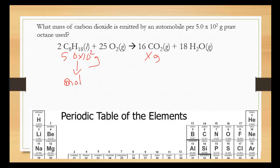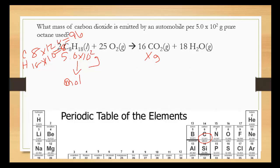Whenever you see the unit grams, you automatically have to think about the molar mass. So let's figure out the molar mass of C8H18. We have eight carbons and 18 hydrogens. Carbon is 12.0 on the periodic table, so eight times 12.0 comes out to be 96. We have 18 hydrogens at 1.0, which comes out to 18. Adding those together gives us 114 grams per mole — that's our molar mass.